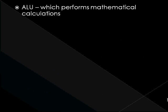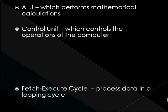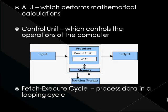The CPU is made up of two main parts. The ALU, Arithmetic and Logic Unit, which performs mathematical calculations, and the Control Unit, which controls the operations of the computer. In addition to those, in order to process data, the fetch-execute cycle is used. It can also be called the fetch-decode cycle. The processor is always looping through this cycle.